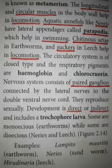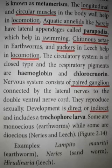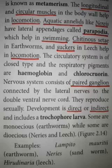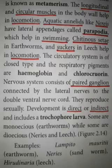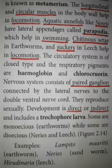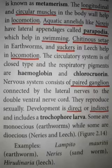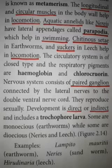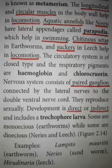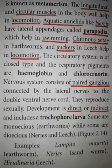The development may be direct or indirect. In direct development, the organism gives birth to young ones similar to the adult. In indirect development, there is a larval stage. The larval stage is the trochophore larva, which is the characteristic larva of phylum Annelida. This may be asked as an exam question.